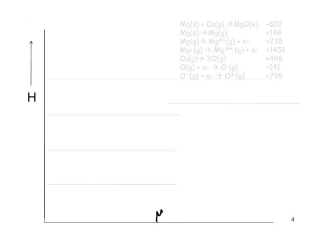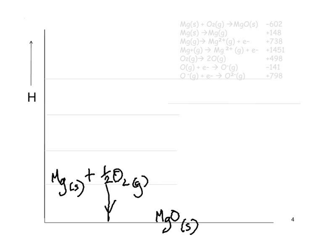So down here we've got the MgO solid. The first change is to take a mole of magnesium solid and react it with half a mole of O2 gas. That's the enthalpy of formation of magnesium oxide which has been given as minus 602.